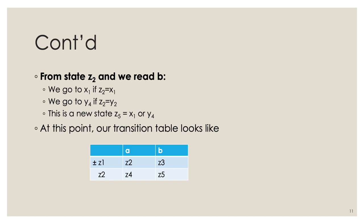We have two states Z1 and Z2 fully resolved, but Z3, Z4, and Z5 are states we go to and we don't yet know their outgoing transitions. Therefore, as long as we have states without known transitions, we have to keep going.